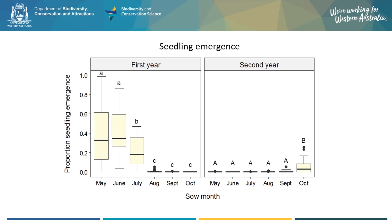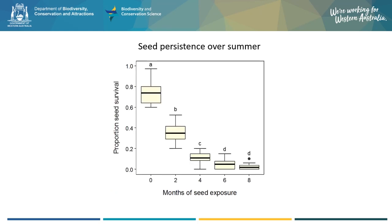However, we see on the right panel that seedling emergence of these later plantings — August or October — was minimal even in the second year. To see why the later plantings might have failed, we also tracked the survival of seeds that failed to germinate after sowing and sat on the soil surface over summer. The y-axis of this figure shows the proportion of these seeds that survived, and the x-axis is the number of months that the seeds were exposed over summer. Here we see that the longer the seeds are exposed, the lower their survival, probably due to longer exposure to higher soil temperatures over summer, or to seed predators.